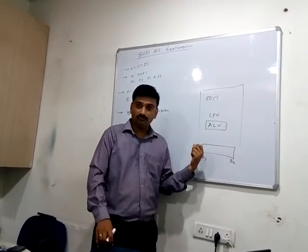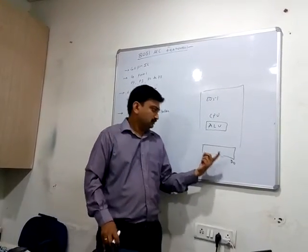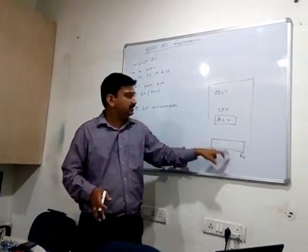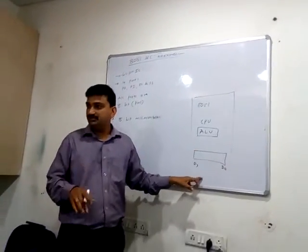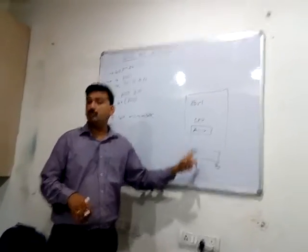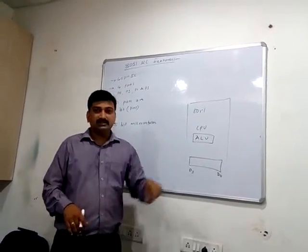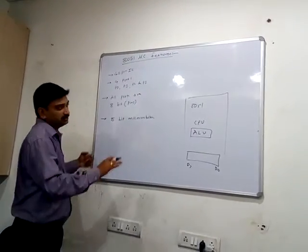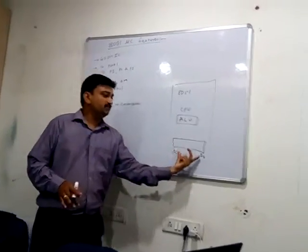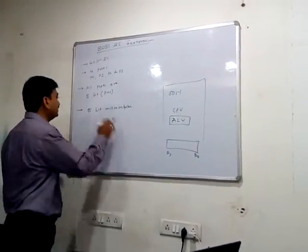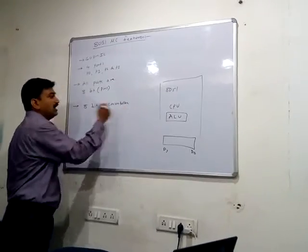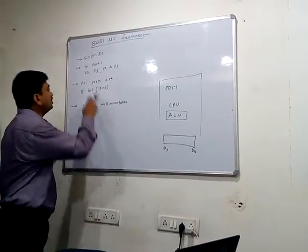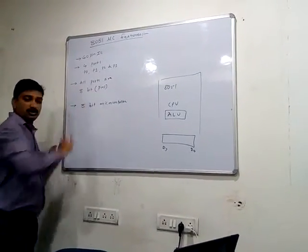All arithmetic operations — addition, subtraction, division, multiplication — take place in the form of 8 bits. Similarly, logical operations such as OR, NOR, and other logical operations also take place in 8-bit form from D0 to D7. That is why it is called an 8-bit microcontroller, and as a result, all ports are 8 bits.